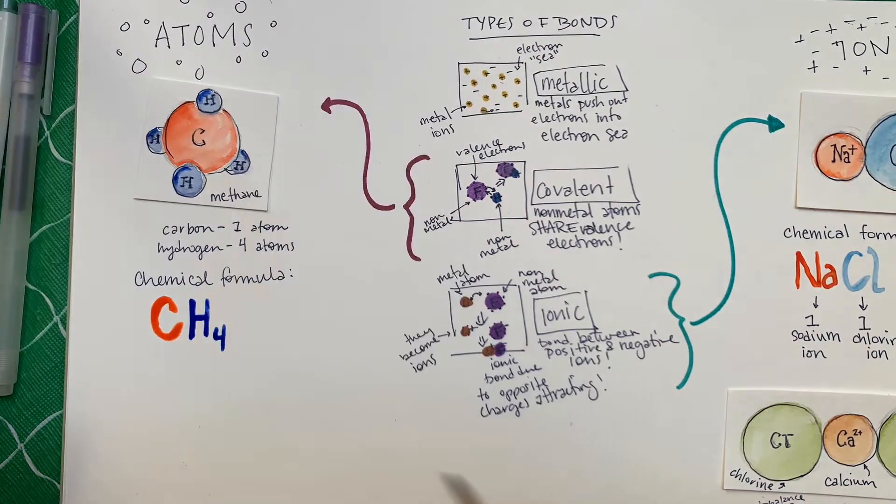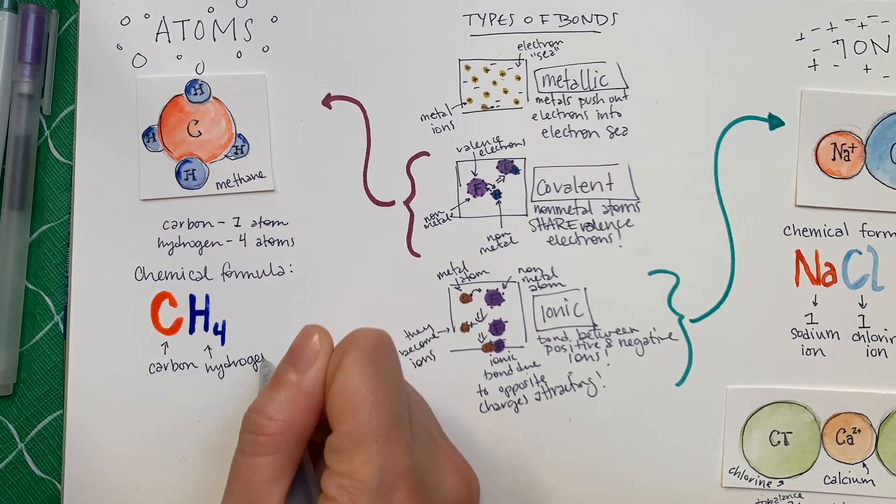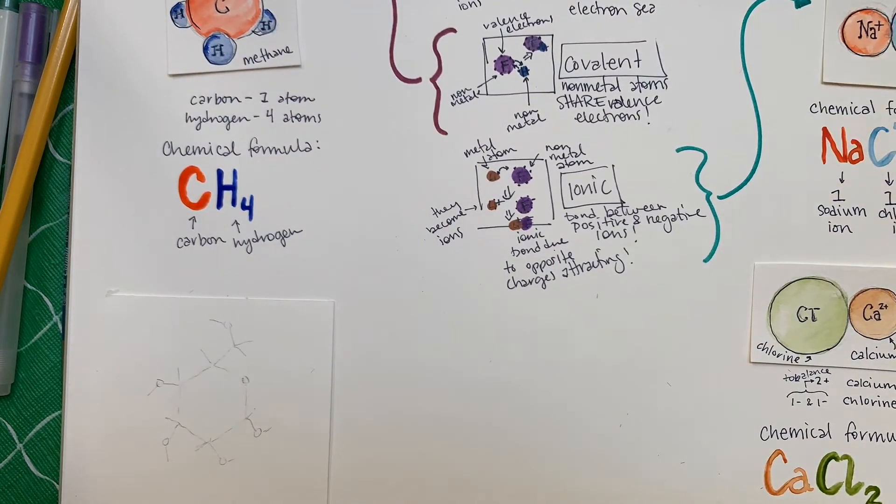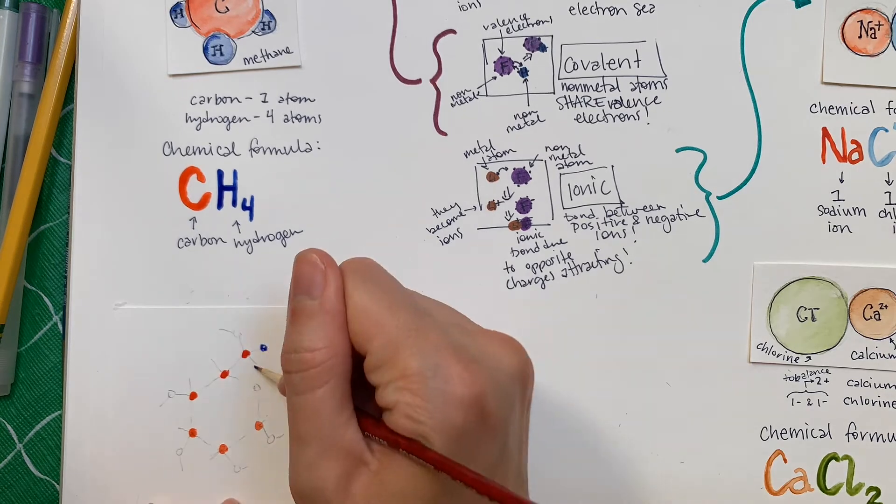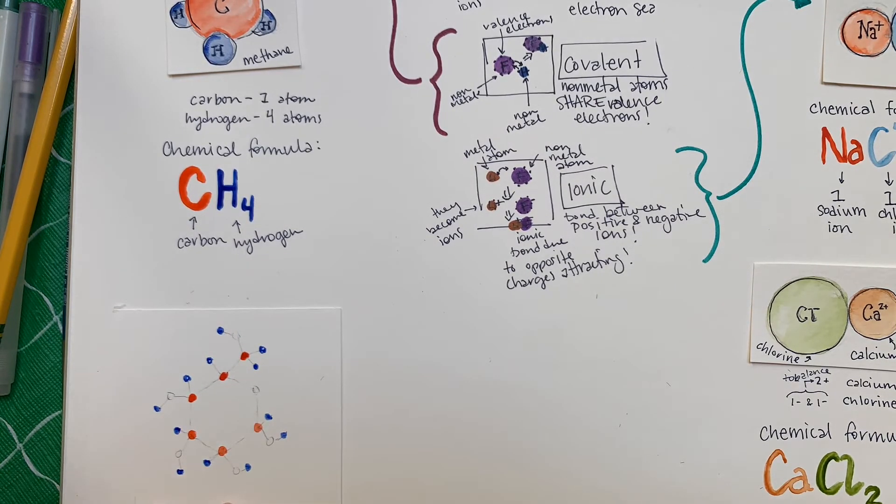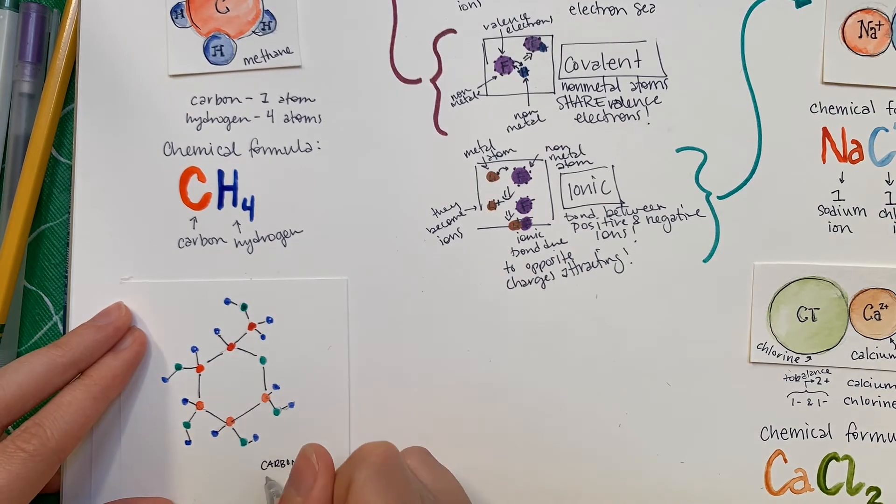Let's try a trickier molecule. Glucose is a type of simple sugar found in carbohydrates that's essential for providing energy to living things. As you can see, it's a molecule that is much larger than the methane we just looked at. It actually has a total of six carbon atoms, 12 hydrogen atoms, and six oxygen atoms.